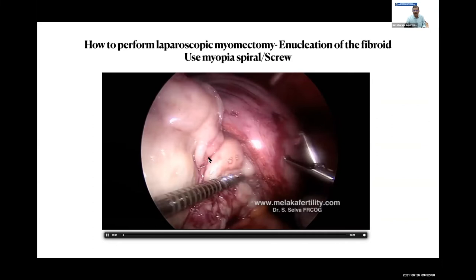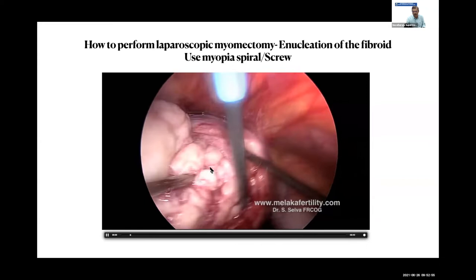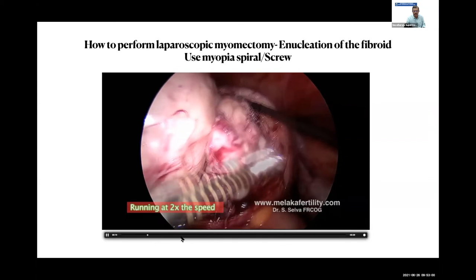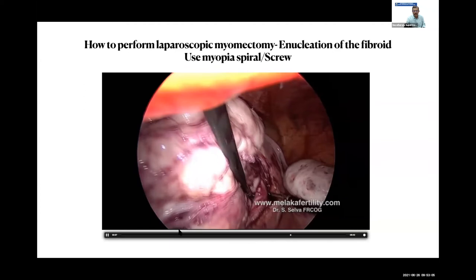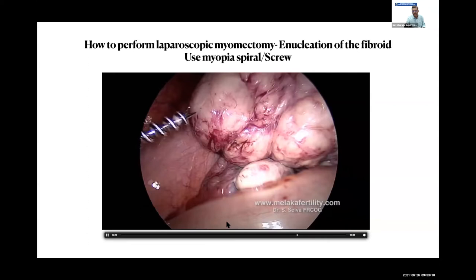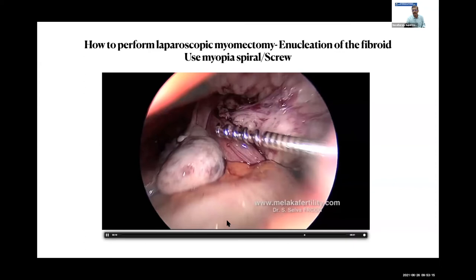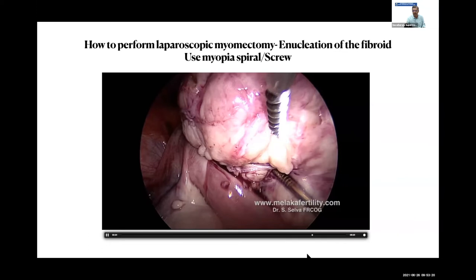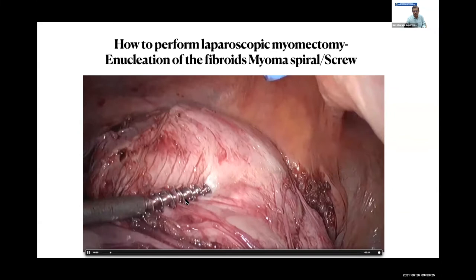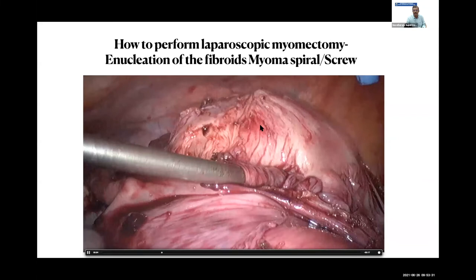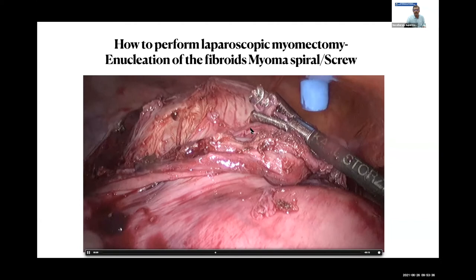For enucleation of the uterine fibroid, one key advice is to make a liberal incision on the uterus — if you make a small incision, you will struggle. You can use a myoma screw or myoma spiral; I sometimes use two myoma screws to enucleate. A myoma spiral is a very good instrument for laparoscopic myomectomy. Note that because it's used so much, the myoma screw can actually break, as happened in one of my cases.